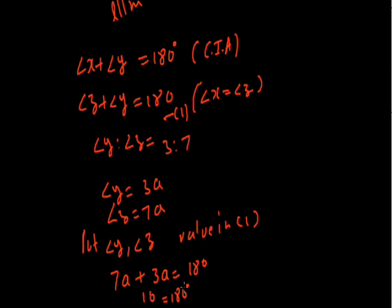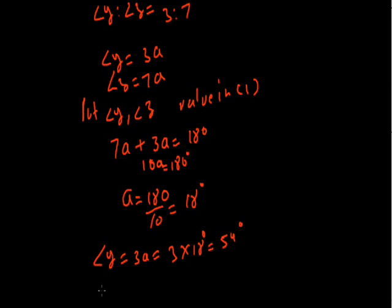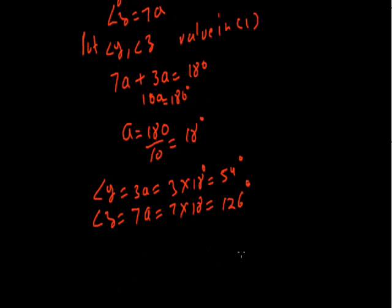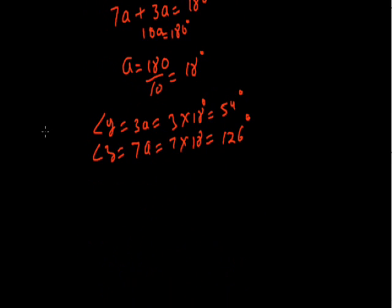So 10a equals 180 degrees, giving a equals 18 degrees. Therefore angle Y equals 3 times 18, which is 54 degrees, and angle Z equals 7 times 18, which is 126 degrees. Since angle X equals angle Z, angle X is also 126 degrees. So X is 126°, Y is 54°, and Z is 126°.